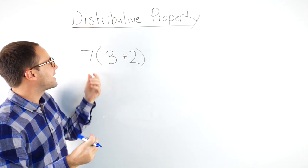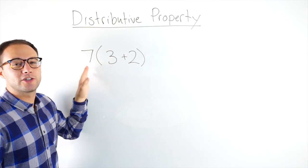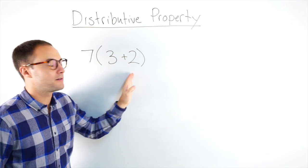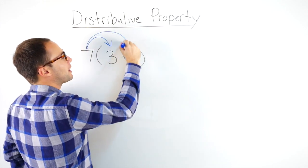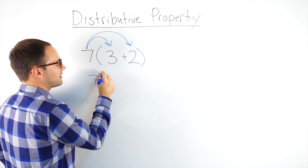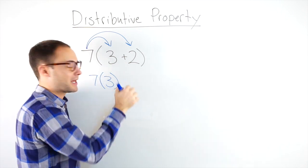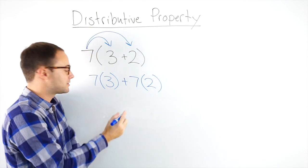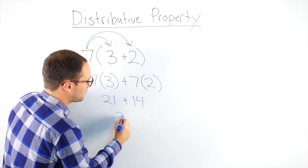Here we have 7 times the sum of 3 and 2. I'm going to distribute the 7 to every term inside the parentheses. So that 7, I'm going to multiply by the 3, and I'm also going to multiply the 7 times the 2. Your operations still stay the same — you just bring them down. So 7 times 3 is 21, plus 7 times 2 is 14, which gives me 35.